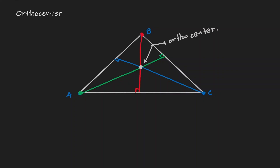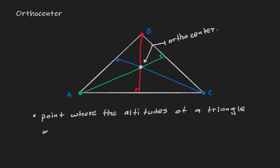Therefore, the orthocenter of a triangle is defined as the location or point where the altitudes of a triangle meet or intersect. There are certain properties that this location has, but for now the only thing we want to do is define what an orthocenter is — it is simply the location where all three altitudes of a triangle intersect.